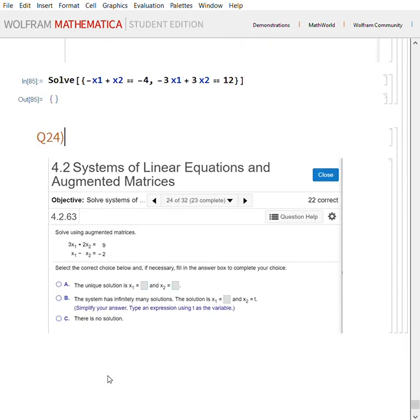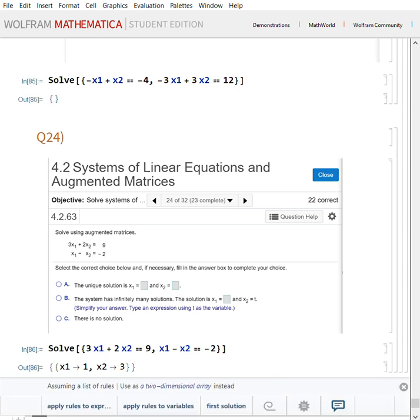All right, so it says same thing. Real quick, which is 3x1 plus 2x2 equals 9, minus x1 minus x2 equals minus 2. Let's check it, and the answer is correct.